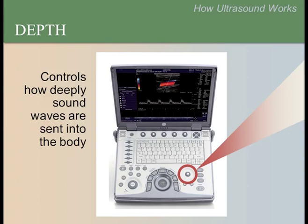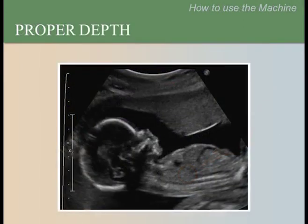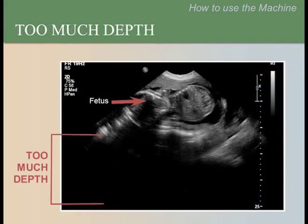The next control is depth. Please locate the depth control on your ultrasound machine. Gain controls the strength of echoes returning to the transducer, while depth controls how deeply you send sound waves into the body. For best quality, the target of your scan should be in the middle of the image. If there is too much depth, there is unwanted information because waves are sent too far into the pelvis. If there is not enough depth, you can only see part of the fetus and information is lost.